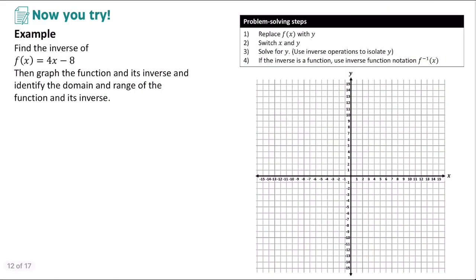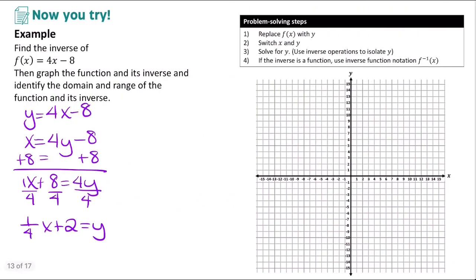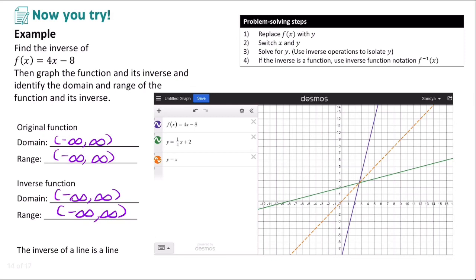Pause the video and try this example on your own: find the inverse of f(x) = 4x − 8. We start by replacing f(x) with y, then switch x and y, and solve for y. First add 8 to both sides, then divide everything by 4, giving us ¼x + 2 = y. Graphing both, they're both lines, so the inverse is a function: f⁻¹(x) = ¼x + 2. The domain and range of both functions are all real numbers.